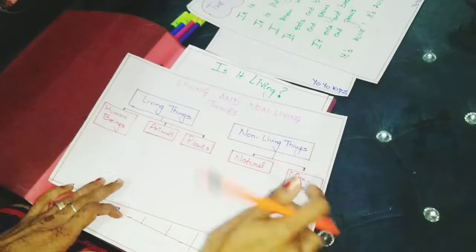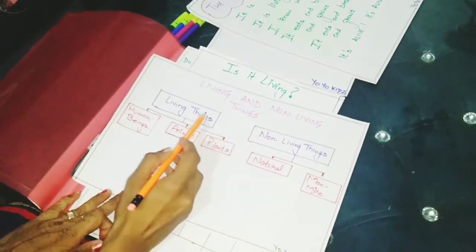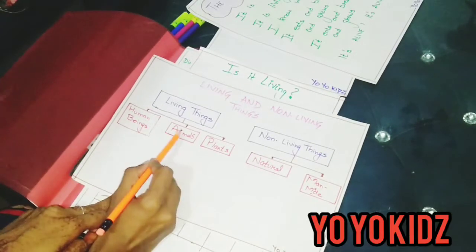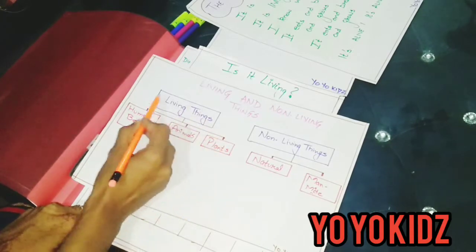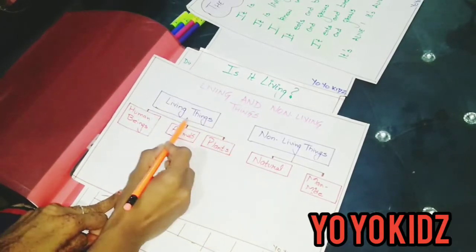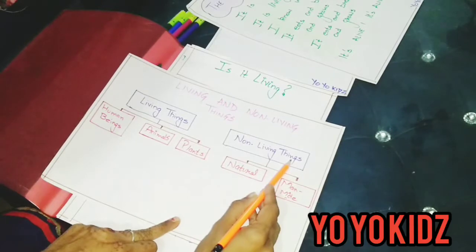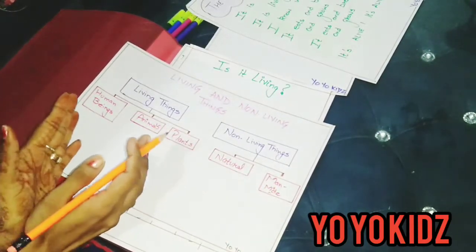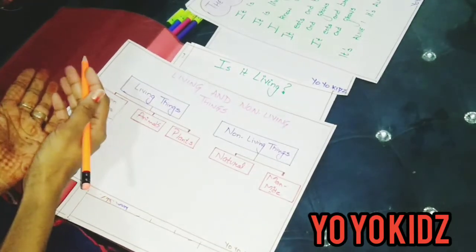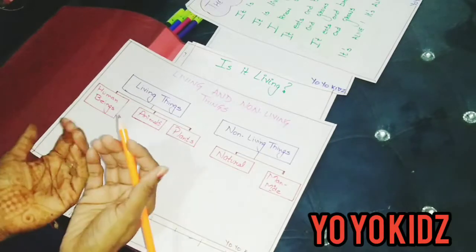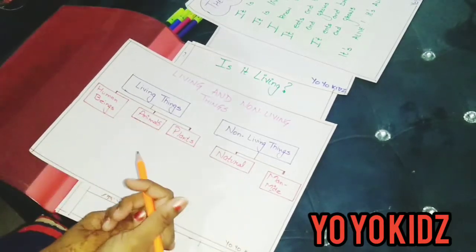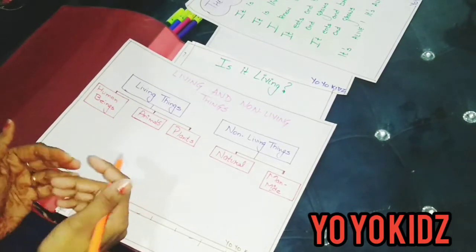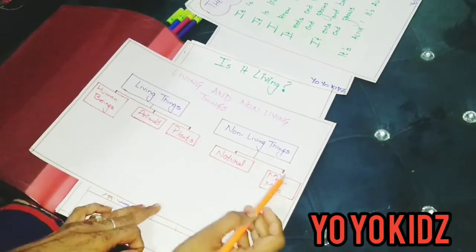Now this is a chart for living things and non-living things. Under living things, three things are given. All human beings, animals, and plants. All these are considered as living things. Non-living things are of two types: natural or man-made. Natural things like sun, clouds, stars. All these are natural things. And man-made things like furniture, toys. All these are man-made things which are non-living.